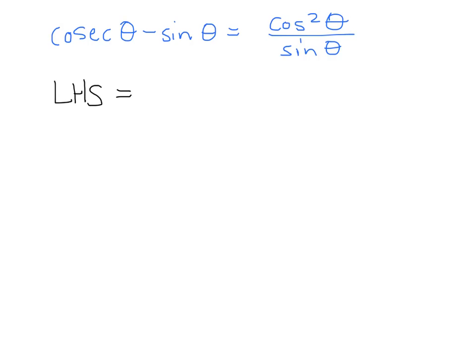So we know cosec is just 1 over sine, so the left-hand side can be turned into 1 over sine theta minus sine theta.